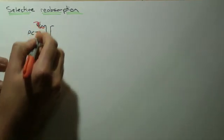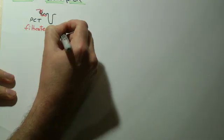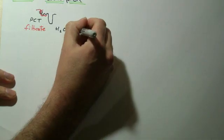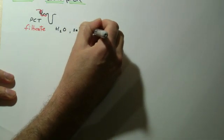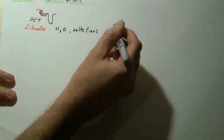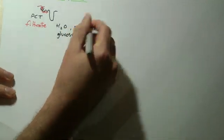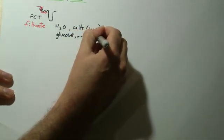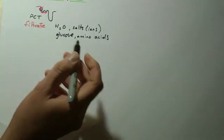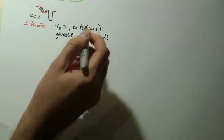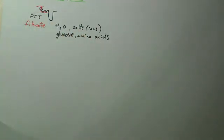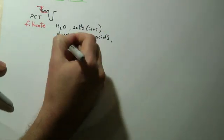So we've got some fluid that's been squeezed out, or filtrate, a nice word to use. And this filtrate contains a lot of water, it contains salts, ions if you like, sodium, potassium ions. It contains glucose, it contains amino acids. Remember amino acids are relatively small, relative molecular mass. We're not talking about the big proteins here, small parts. And of course, urea.